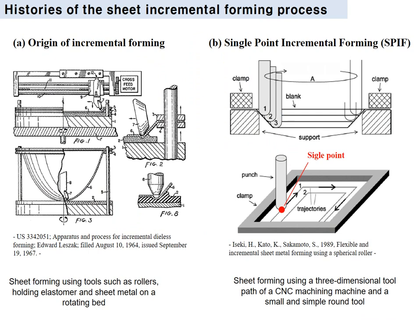I will explain the history of the sheet incremental forming process. The first figure shows the origin: sheet forming using tools such as rollers, holding elastomers, and sheet metal on a rotating bed. Next, Iseki developed the concept of the single-point incremental forming process, employing a three-dimensional CNC machine with a small and simple round tool along a three-dimensional tool path.